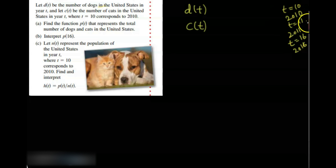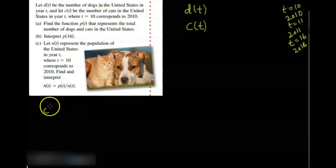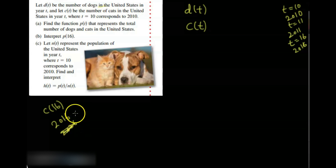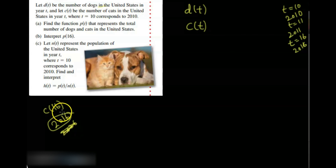In the previous example I made a mistake: c of 16 should be 2016, not 2026, because t equal to 10 means 2010, so t equal to 16 means 2016.